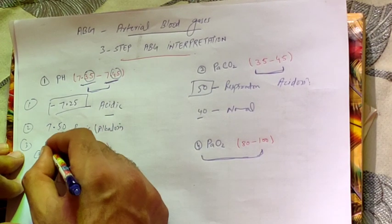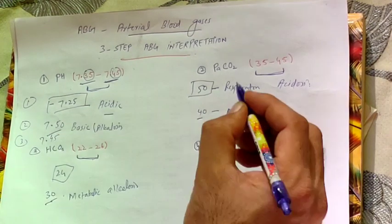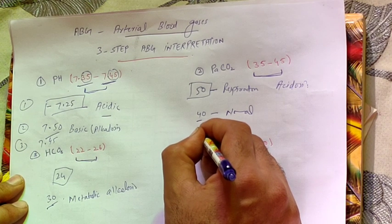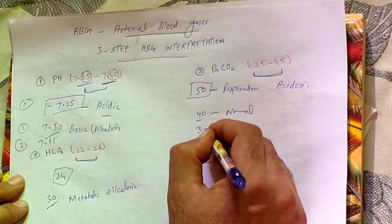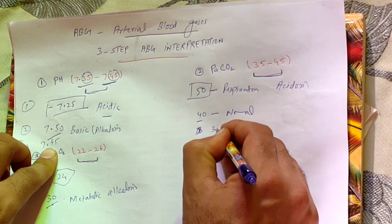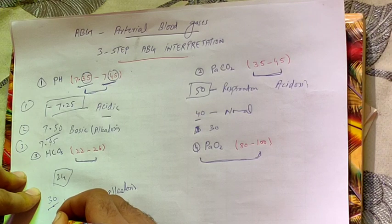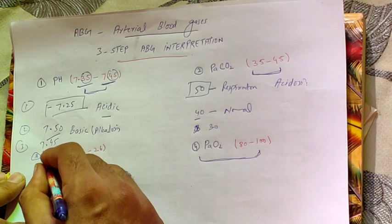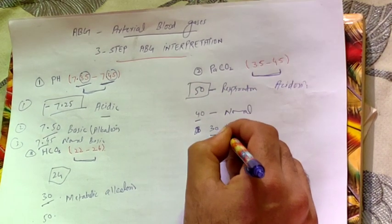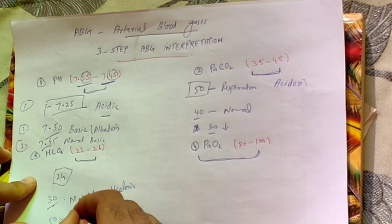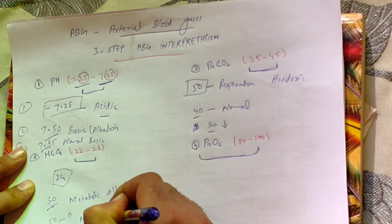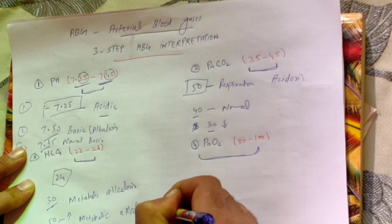Example three: pH 7.45 (normal, on the basic side), CO2 is 30 (below normal), and bicarb is 50 (above normal). Carbon dioxide is below normal, and bicarb is well above normal. Since pH is on the basic side and bicarb is elevated, this is metabolic alkalosis with respiratory compensation.